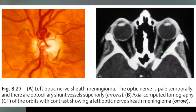Optic nerve sheath meningiomas can also present with temporal pallor — the neural retinal rim of the temporal part of the optic disc is a bit pale. Looking at this patient's disc, you can see temporal pallor. On neuroimaging — a CT in this case — you can see enhancement and enlargement of the optic nerve sheath, indicating a probable optic nerve sheath meningioma.